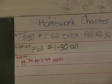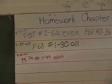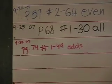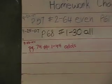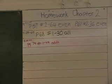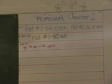Page 57, 2 through 64, evens. Page 61, 2 through 36, evens. Page 68, 1 through 30, all. And page 74, number 1 through 49, odds. 74, 1 through 49, odds. That's all on Teacher Ease as well, just for all of you folks who are digitally connected.